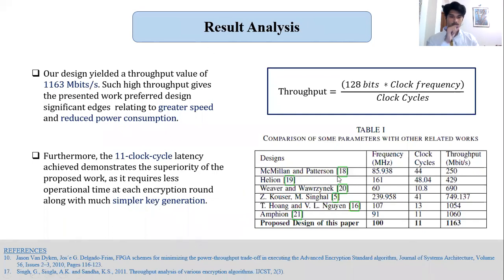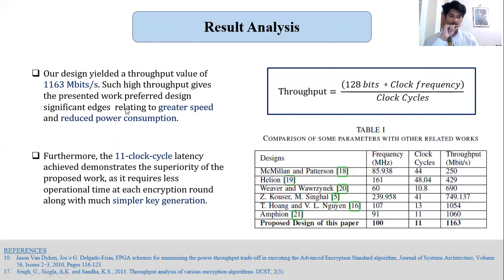On the right side, we have tabulated a comparison of our proposed work with some of the previous works. As we can see, we have yielded better results in terms of both latency and throughput. Our design yielded a throughput value of 1163 Mbps, which has been calculated using this equation. Such high throughput gives the presented work significant advantages related to greater speed and reduced power consumption. Furthermore, due to low latency, it also requires less operational time at each encryption round along with much simpler key generation.